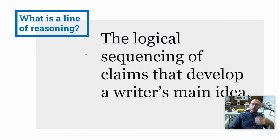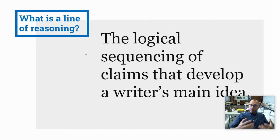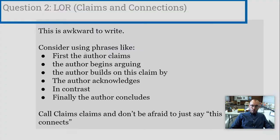Don't get into the specific evidence — you don't have the time. For question one, just write a one- or two-sentence summary of the main idea including the claims the author has. For question two, you must identify the line of reasoning, which is the logical sequencing of claims that develop a writer's main idea. It is like a map, and you're stopping at different locations along the map to prove that your main idea is correct.